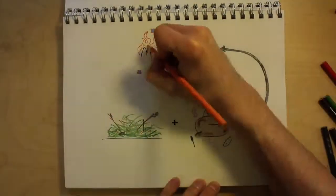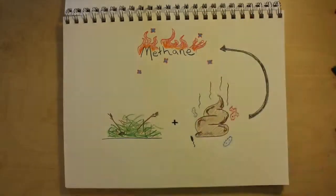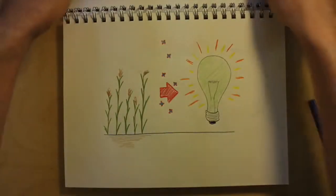Methane is flammable, so you can burn it and use it like natural gas. So that's it, from grass to gas to power.